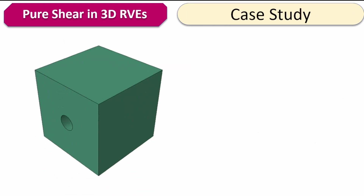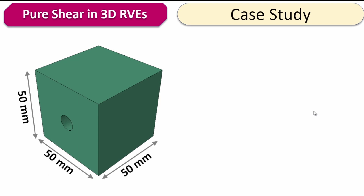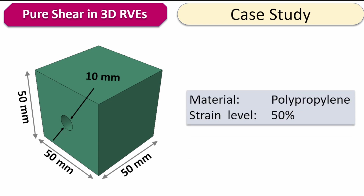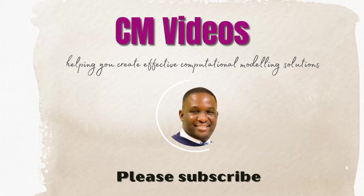The case study we're going to examine is a simple material block with dimensions of 50 by 50 by 50, with a central hole of 10 millimeters in diameter. The material will be polypropylene, and I'm going to apply a 50 percent strain level to the system.